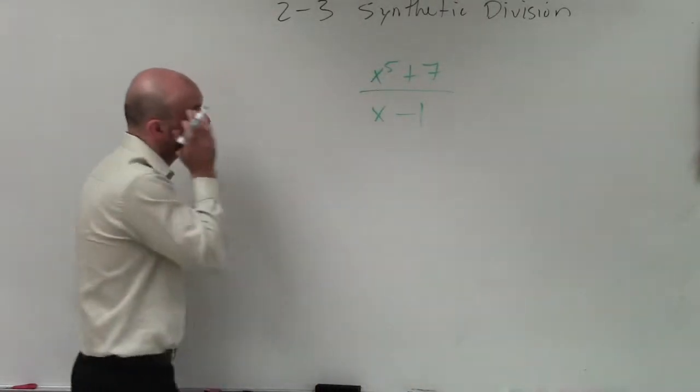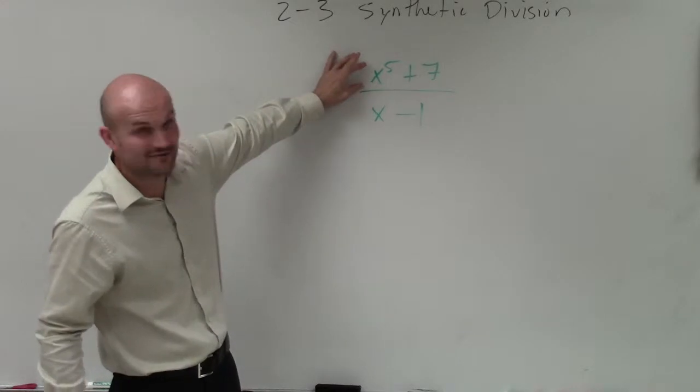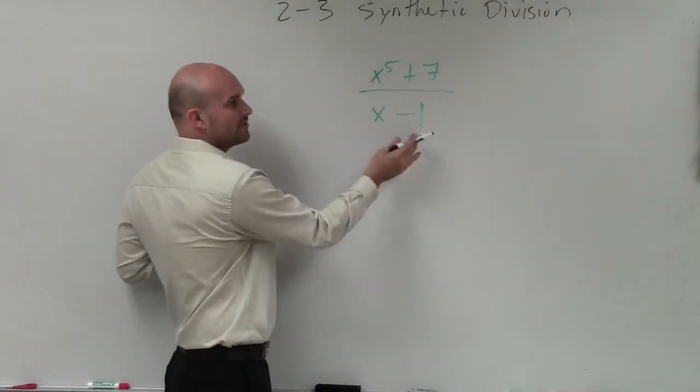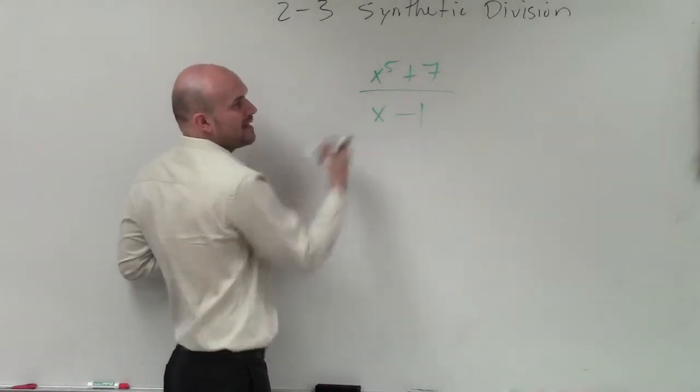If we're going to be taking a look at what we have is this polynomial x to the fifth plus seven, and what we want to do is be able to determine, x minus one, will that divide evenly into that polynomial?